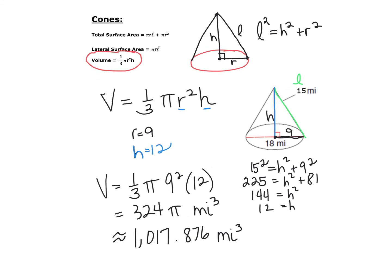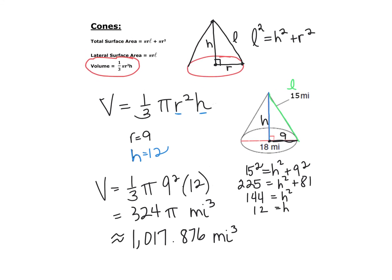So when we find the volume of our cone, we just need the radius and the height. And if it's not given to us, we would have to find it first using the Pythagorean theorem, and then plug it into our formula.